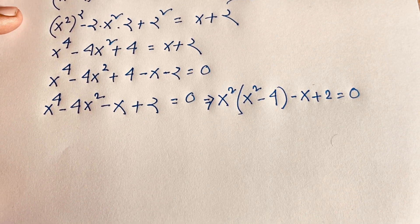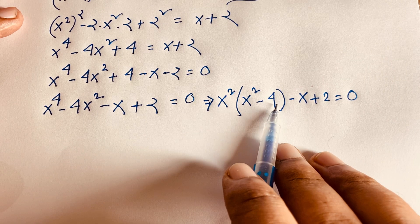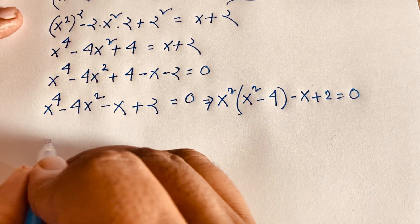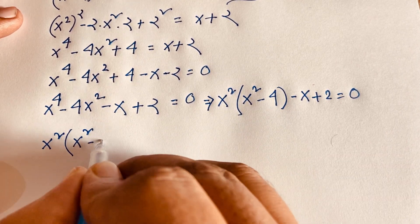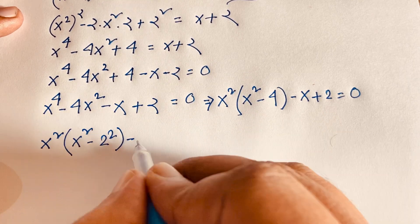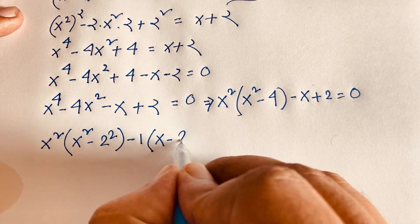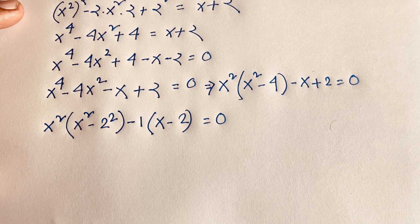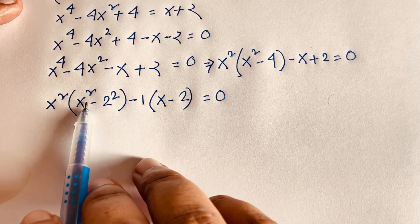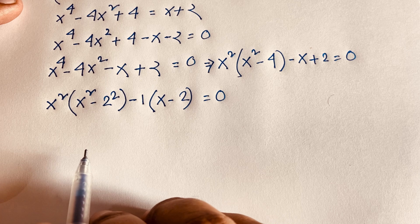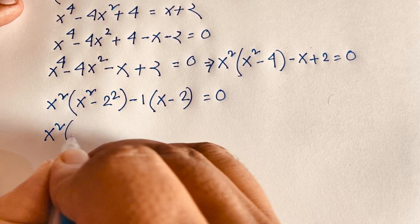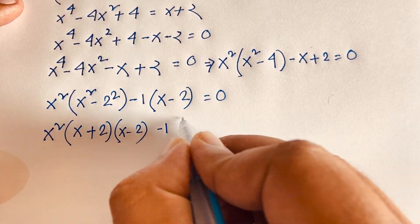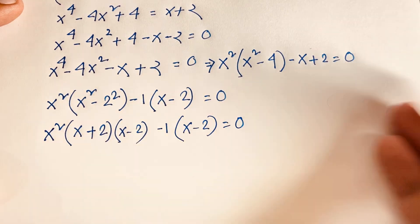Now, x² - 4 can be written as x² - 2², and using the difference of squares identity a² - b² = (a + b)(a - b), we get x²(x + 2)(x - 2). Then -1 is common, giving us minus (x - 2) = 0, since (x + 2) divided out.